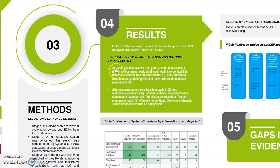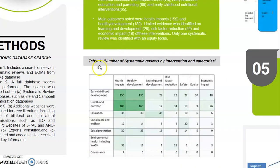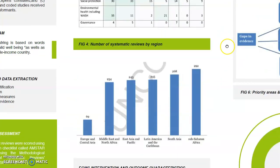The 333 systematic reviews identified good amounts of evidence in traditional areas of health and education intervention. There were gaps in evidence on social welfare, social protection, and governance-related interventions. Main outcomes noted were related to health impacts and healthy development. Limited evidence was identified on learning and development, risk factor reduction, and economic impact of these interventions. Only one systematic review was identified with an equity focus. Table 1 shows the concentration and gaps in evidence in each cell. Clearly, health was heavily concentrated.